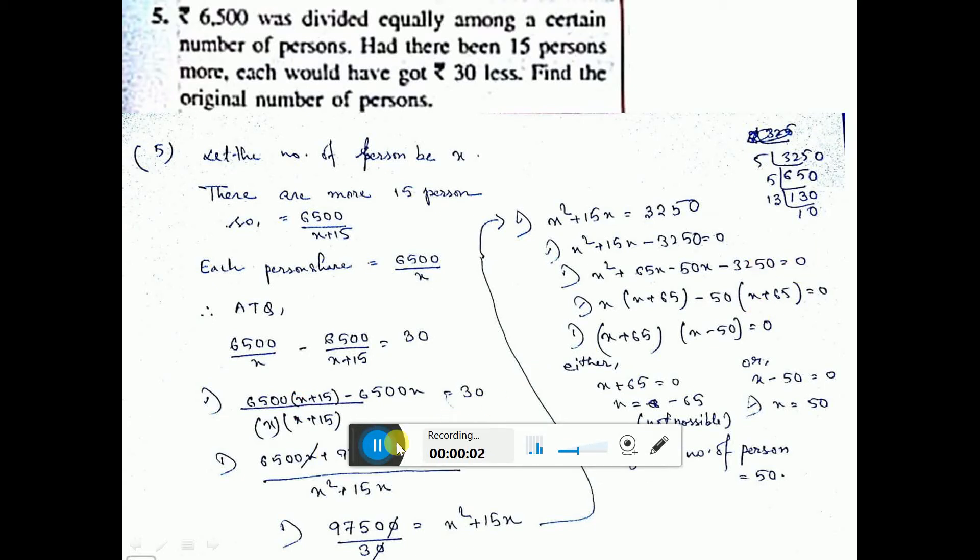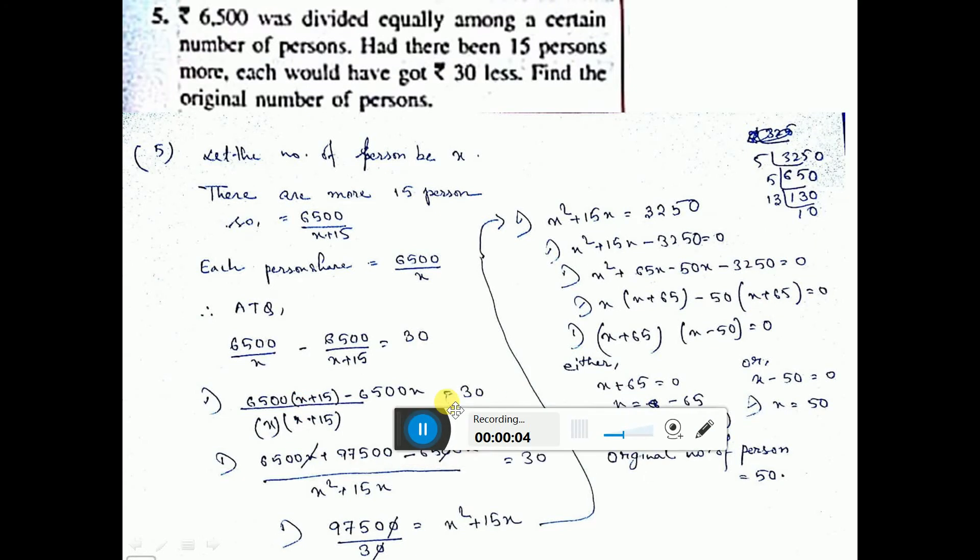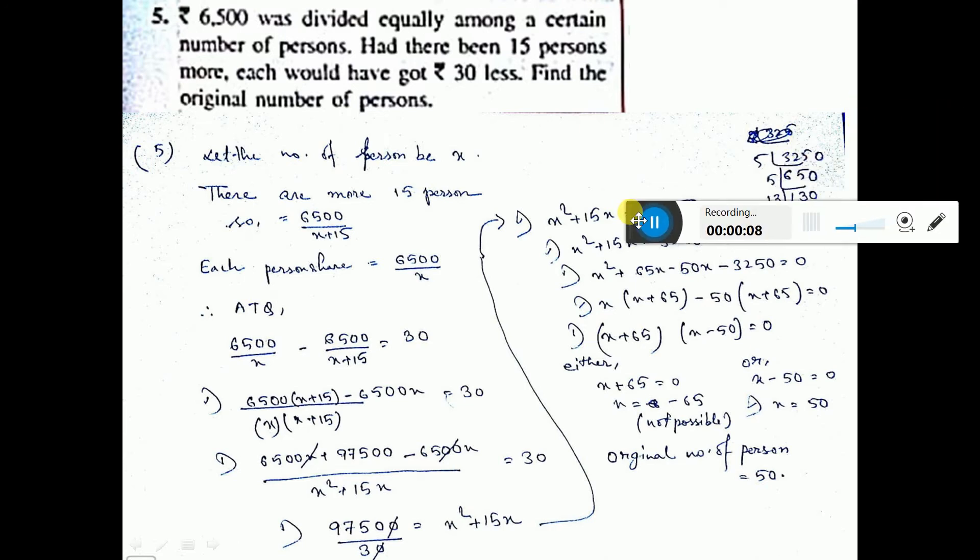Let us do number 5 now. 6,500 was divided equally among a certain number of persons. Had there been 15 persons more, each would have got 30 less. Find the original number of persons.